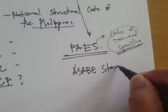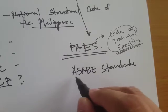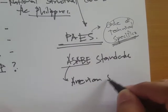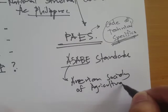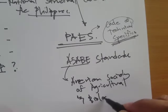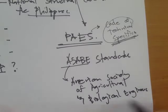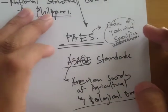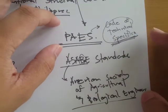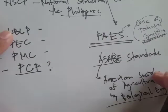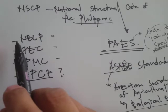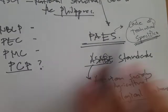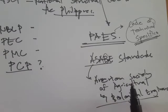Another one we'll use is the ASABE Standards. ASABE is the American Society of Agricultural and Biological Engineers. Note that the letter 'B' corresponds to Biological, not Biosystems. There are details not present in the National Structural Code of the Philippines — for example, loadings for livestock housing — and the ASABE Standards provide values for those types of buildings.